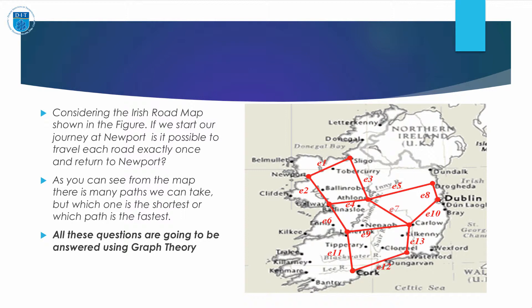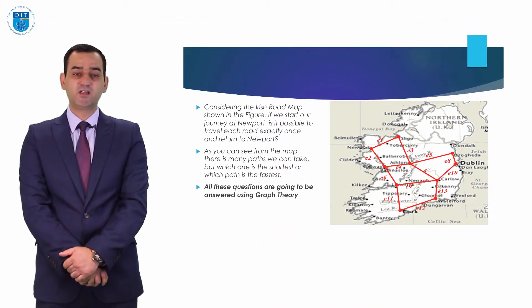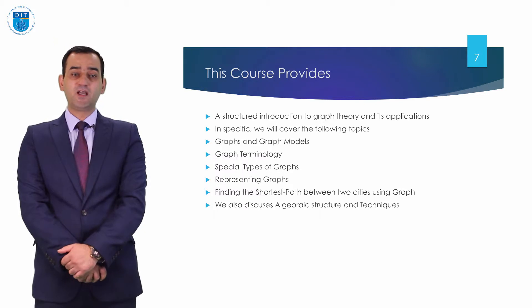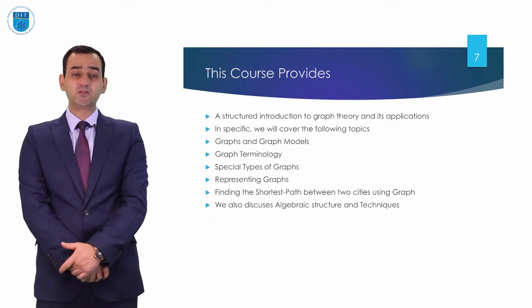As you can see from the map, there are many paths we can take, but which one is the shortest, or which path is the fastest? All these questions are going to be answered using graph theory.